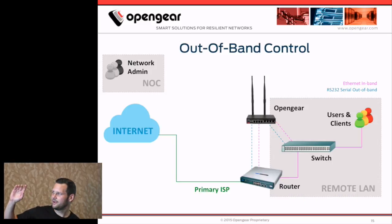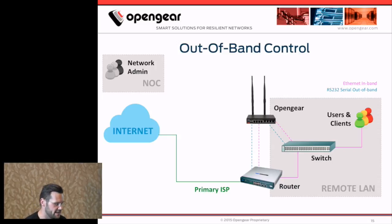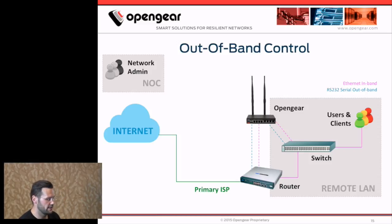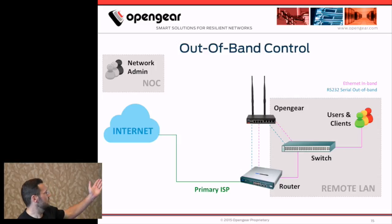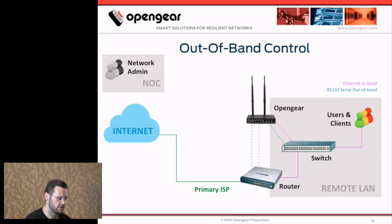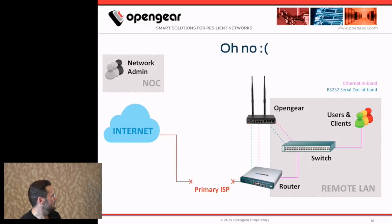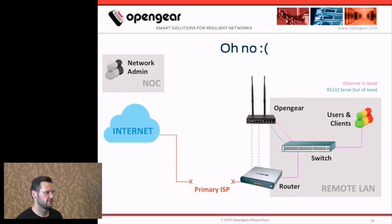I'm building out a network diagram, eventually getting to what we're going to demo. We're talking about RS232 connections at a small remote LAN — it might be a branch office, a wiring closet, or a retail store. From your NOC you've got skilled hands who can come in over your primary LAN connection and manage your remote kit. However, if you've lost your WAN you obviously can't do that. The console server — the traditional out-of-band element — takes care of LAN resilience, but not necessarily WAN resilience.